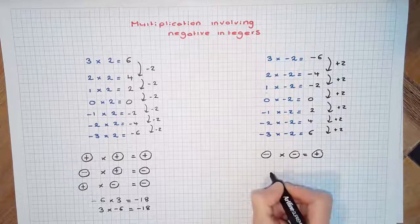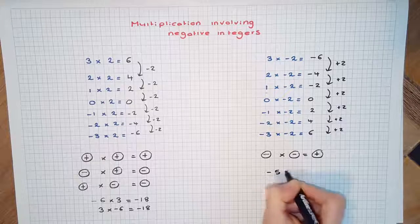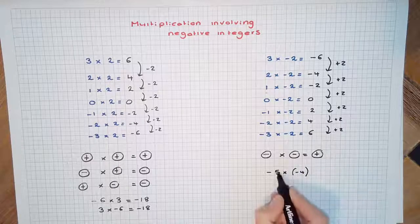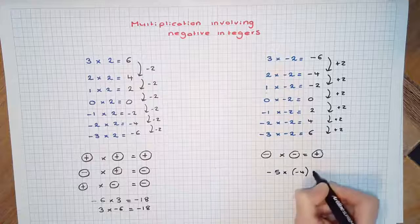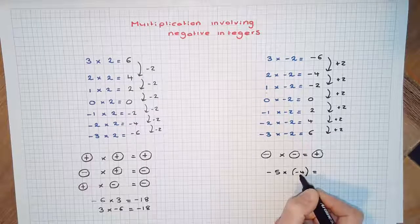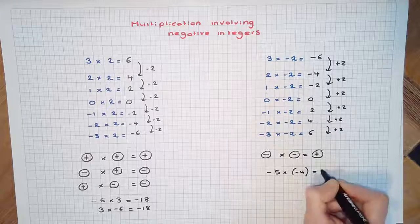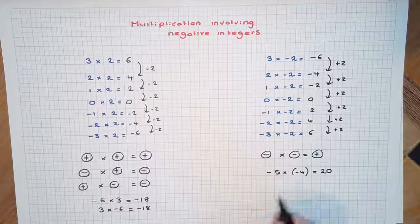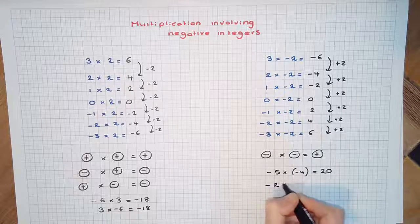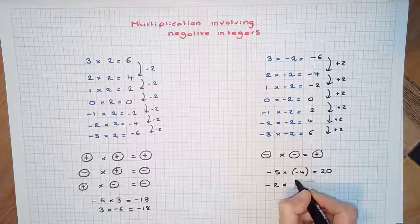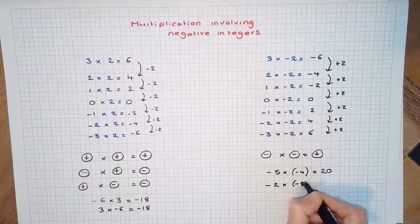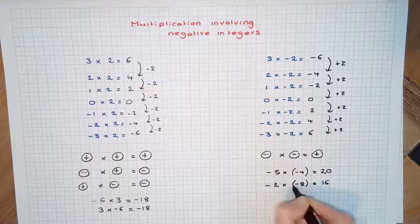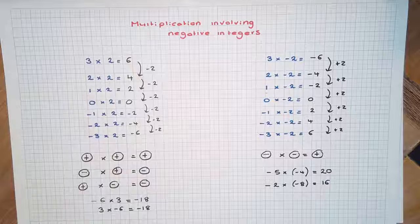Let's do an example. Negative 5 times negative 4: 5 times 4 is 20, and because they're both negative, the answer is positive 20. Similarly, negative 2 times negative 8 will be 16, and because they're both negative, the answer will be positive.